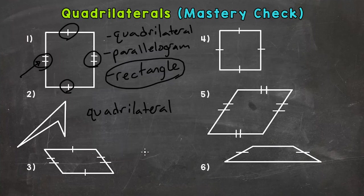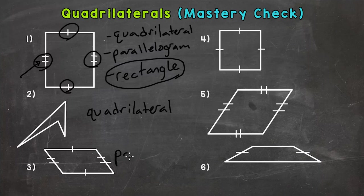Number three. It looks like the left and the right are parallel, and the top and the bottom are parallel, so this has two pairs of parallel sides. The best classification for number three is parallelogram.